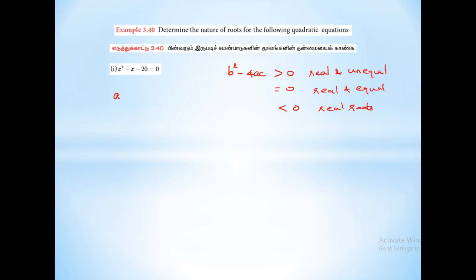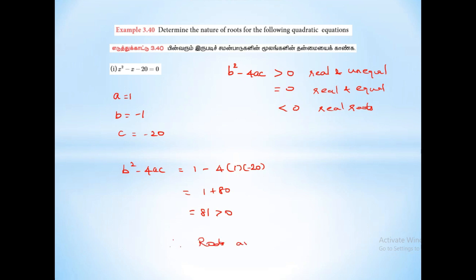So first example: a is equal to 1, b is equal to minus 1, c is equal to minus 20. So B²-4ac equals 1 minus 4 into 1 into minus 20, which equals 1 plus 80, which equals 81. 81 is greater than 0. Therefore, roots are real and unequal.